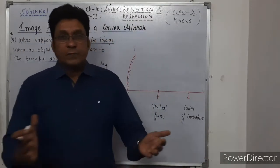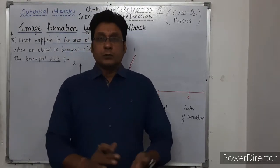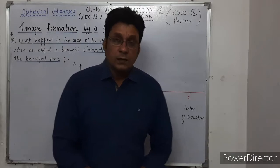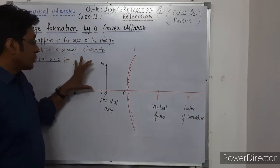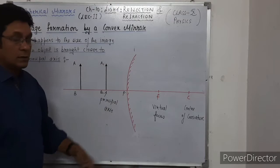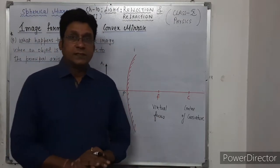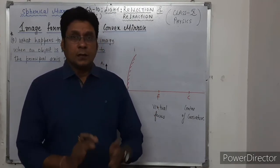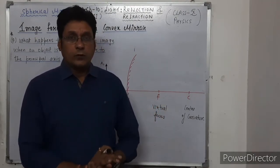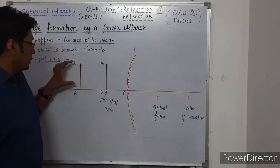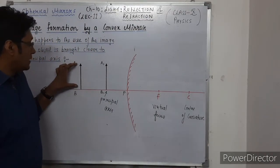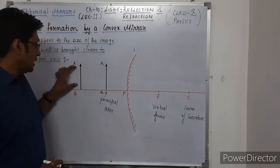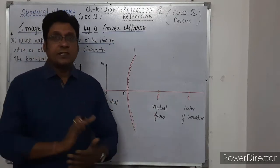Hello students. As I have promised you in my previous video, we will have a very important question related to convex mirror. What happens when the object is brought closer to the convex mirror? We need to learn more about the convex mirror. I have written the object AB and A1 and B1 so you will have a little clarity.